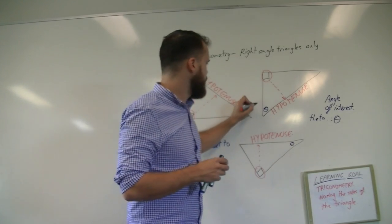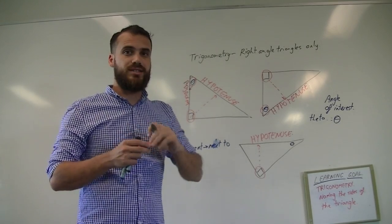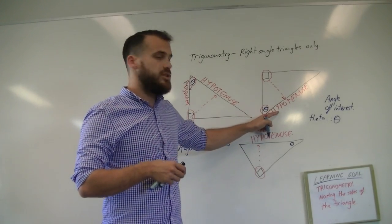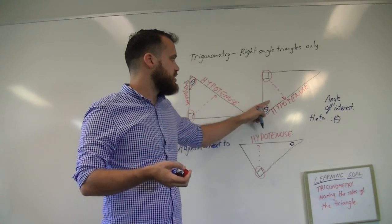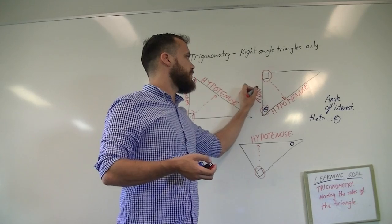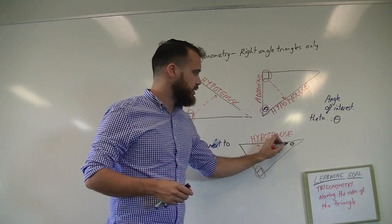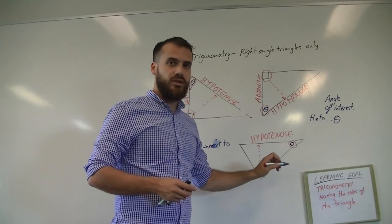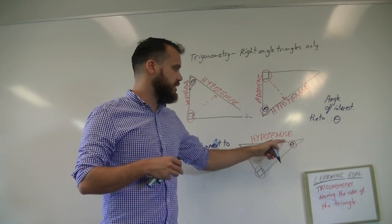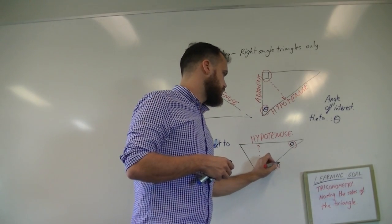For the next triangle, look at the angle of interest and find the side adjacent to it. There's a side next to it that's the hypotenuse, so it must be the other side that's next to it — that's adjacent. And finally for the third triangle, here's our angle of interest; look for the side next to it. There's the hypotenuse, so the one next to it must be this one — adjacent.